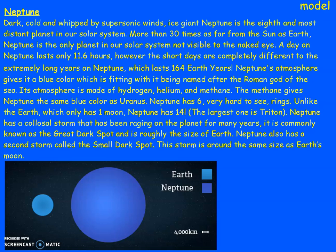So, Neptune: dark, cold, and whipped by supersonic winds. I did have 'fast' there, but I used my thesaurus to up-level it and change it to 'supersonic'. Ice giant Neptune is the eighth and most distant planet from our solar system — more than 30 times as far from the sun as Earth. I'm using formal and factual language. Neptune is the only planet in our solar system not visible to the naked eye, meaning if I looked up at the night sky I would be able to see any other planet — even Uranus, Jupiter, or Saturn — but not Neptune.